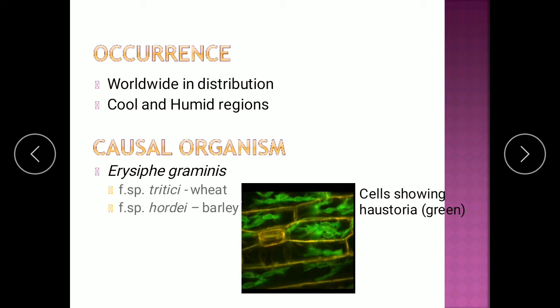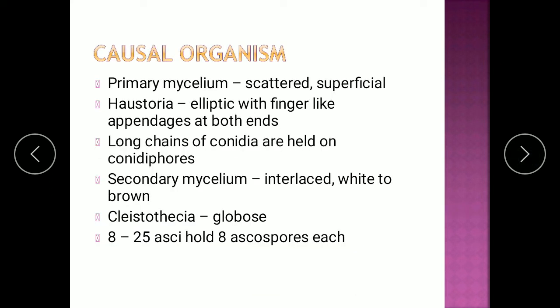In this picture the cells are shown with haustoria within them. The haustoria are intracellular, present within the cells, shown in green. The organism shows two types of mycelium: primary and secondary. The primary mycelium is scattered and superficial, and it produces haustoria inside the epidermal cells. These haustoria are ellipsoidal with finger-like projections on both ends. Outside the plant, long chains of conidia are formed on conidiophores, all part of the primary mycelium.